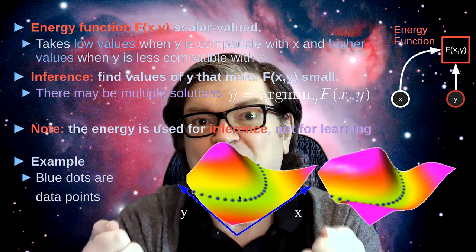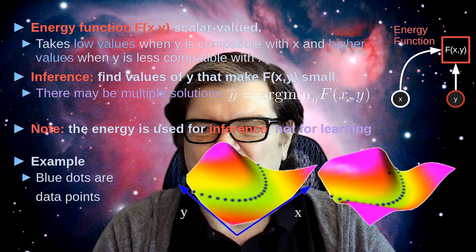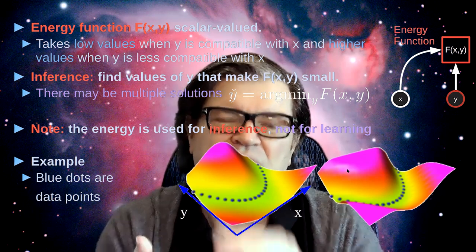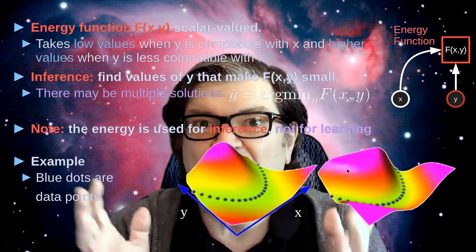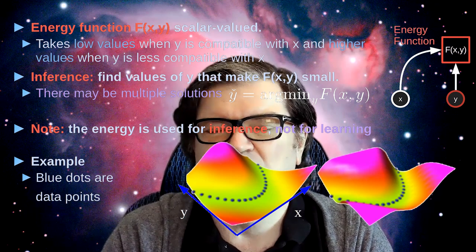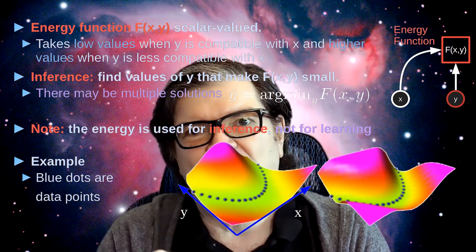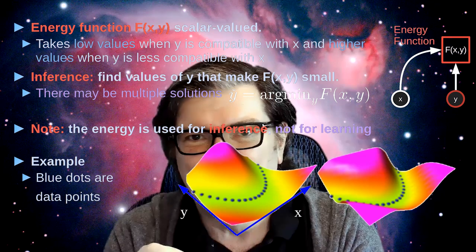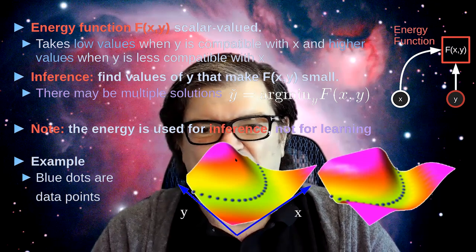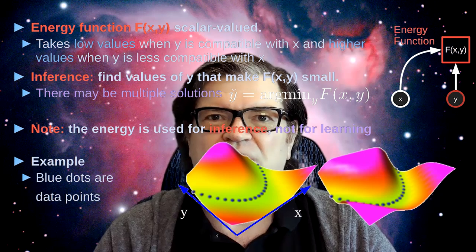I don't have an explicit representation of y equals x squared. I just have an energy function that makes me pay a price for making y different from x squared. There are several energy functions that will give exactly the same result — they can have different shapes. The only thing required is that they have a minimum at the good values compatible with x, and all values of y not compatible with x have higher energy than the ones that are.